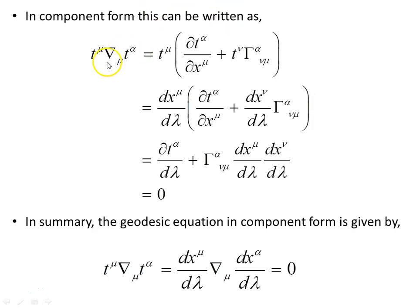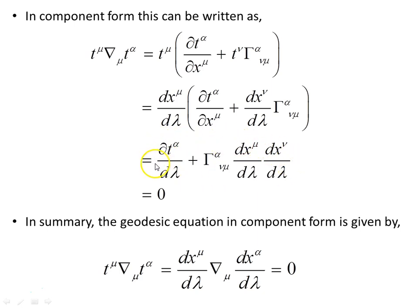In component form, this can be written with the components of the tangent vector dx^mu/d_lambda times the covariant derivative of the tangent vector — the same derivation as before — giving us the geodesic equation. In summary, the geodesic equation in component form is given by this expression equals zero, or written out explicitly as the full equation equals zero.